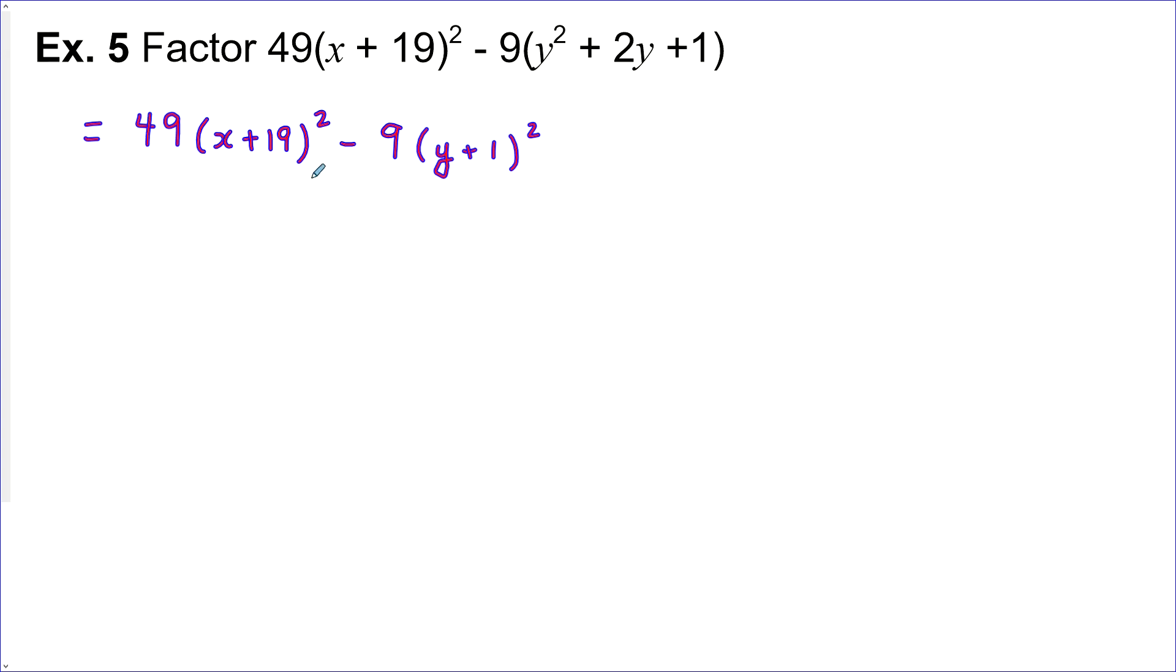Now we have this whole first term is a perfect square. This whole second term is a perfect square. We're missing the middle term. This is a difference of perfect squares even though we've got two variables and all the stuff going on. How do we factor those? Well, first we look for a common factor. We don't have one. Then we'll just take the square root of the first term. Square root of 49 is 7. Square root of this squared is just this. Minus square root of this, square root of this. Close that. And then we do the same thing, but with a plus in between these two terms.